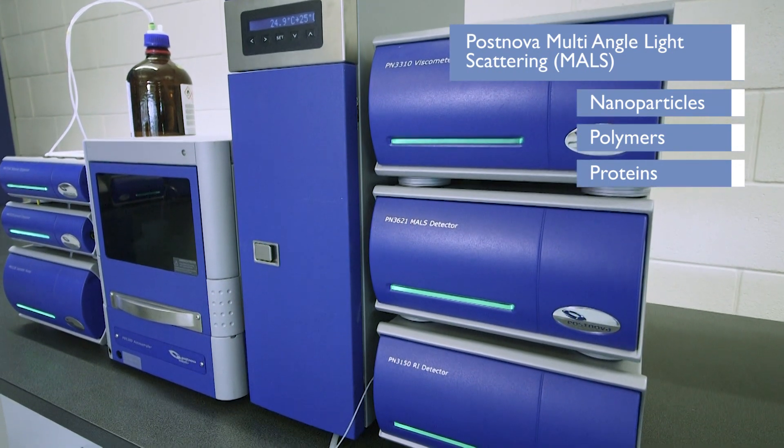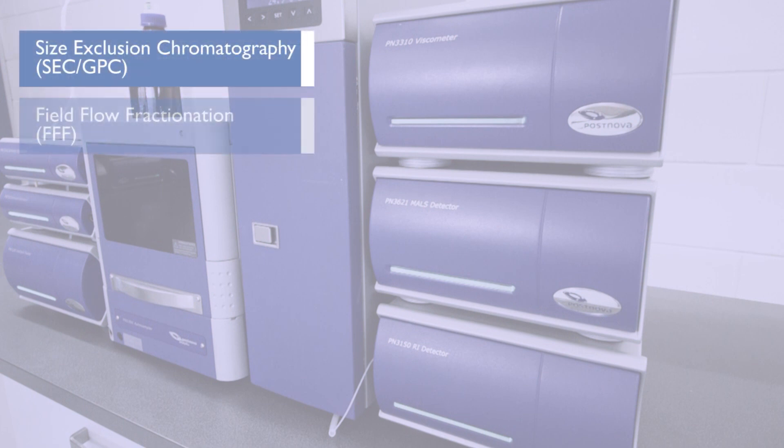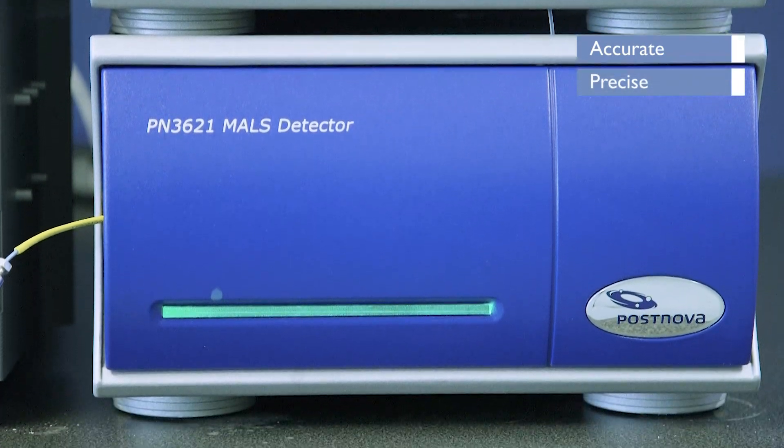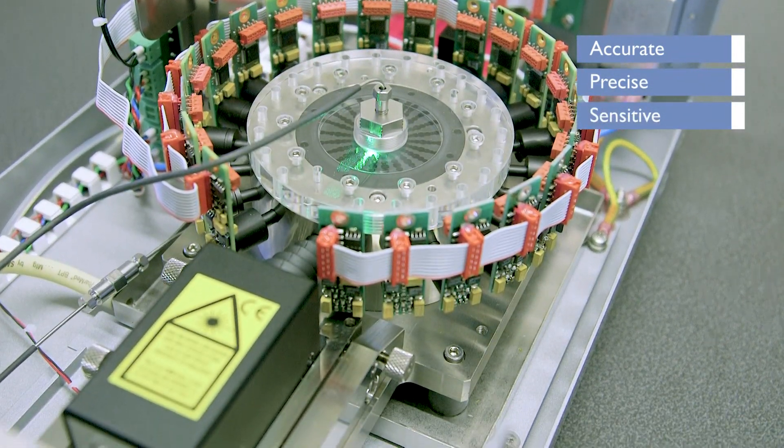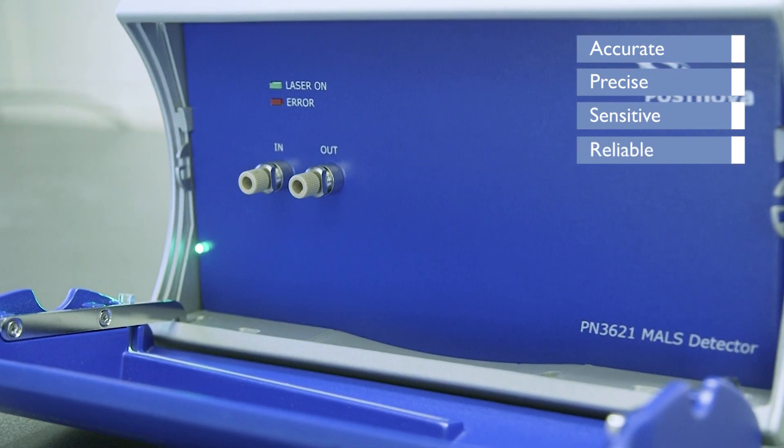The Postnova MALS is now setting the highest standard in multi-angle light scattering detection for size exclusion chromatography and field flow fractionation. It produces the most accurate and precise results at the highest sensitivity levels that you demand. At the same time, it is highly robust, absolutely reliable and simple to maintain and operate.